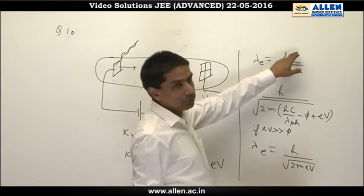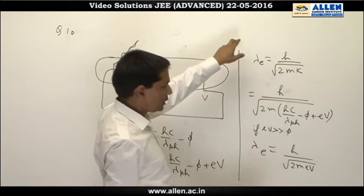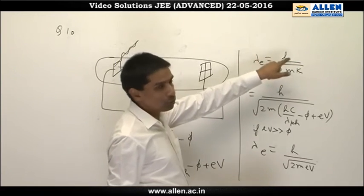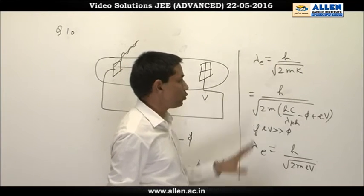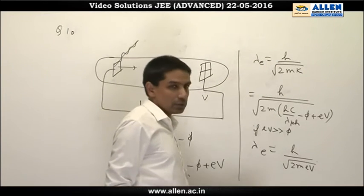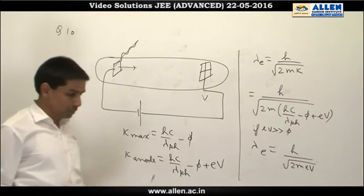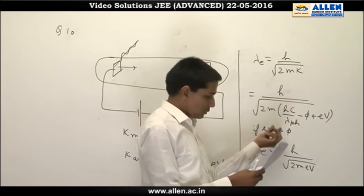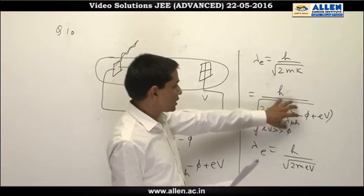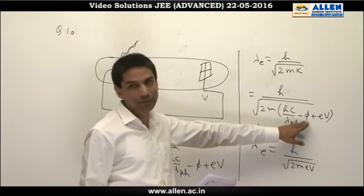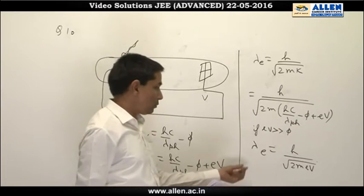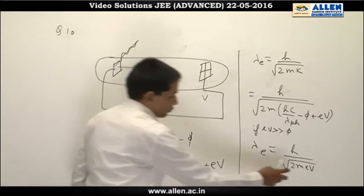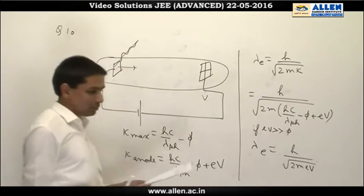For the de Broglie wavelength of electrons, using p = h/λ and p = √(2mK), we can say the wavelength of the electrons is λ_e = h/√(2mK), which comes out to this particular value. Now in option A, eV is much much greater than φ, so we can neglect the entire term hc/λ_ph − φ. The only prominent term gives λ_e = h/√(2meV). So if V is made 4 times, then approximately λ_e becomes half.